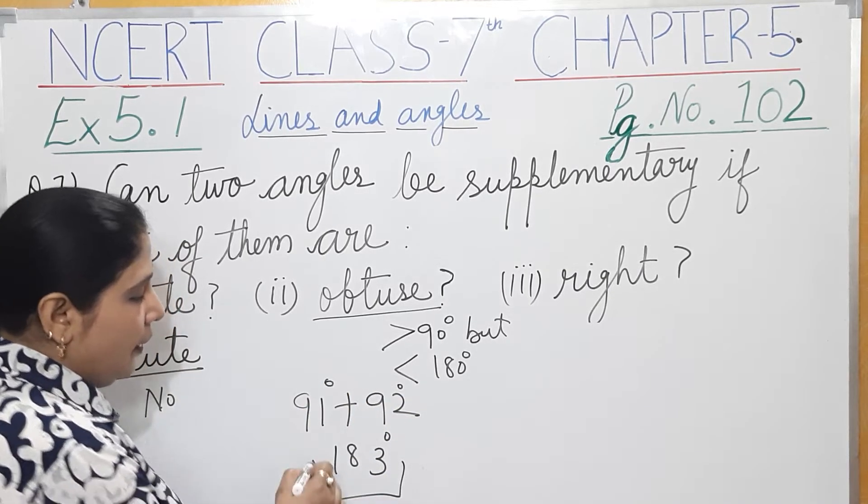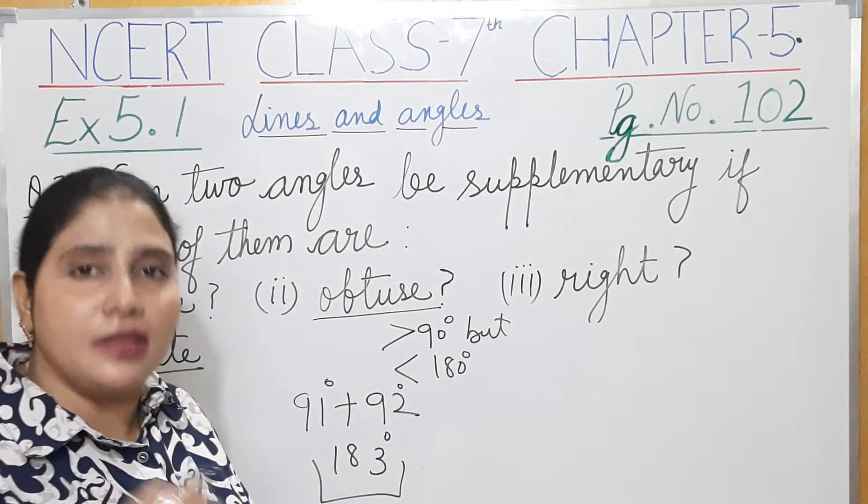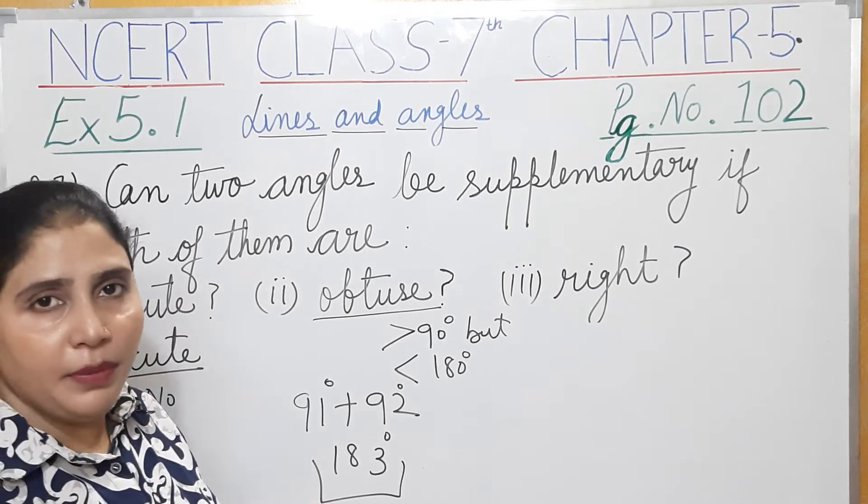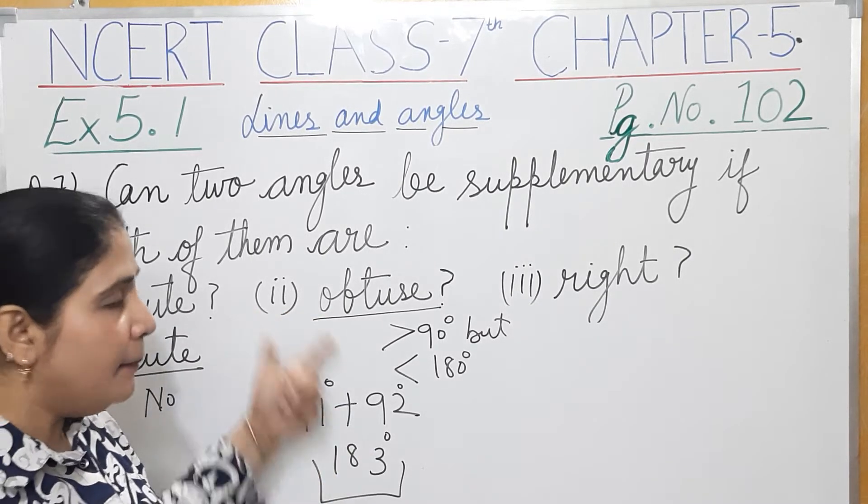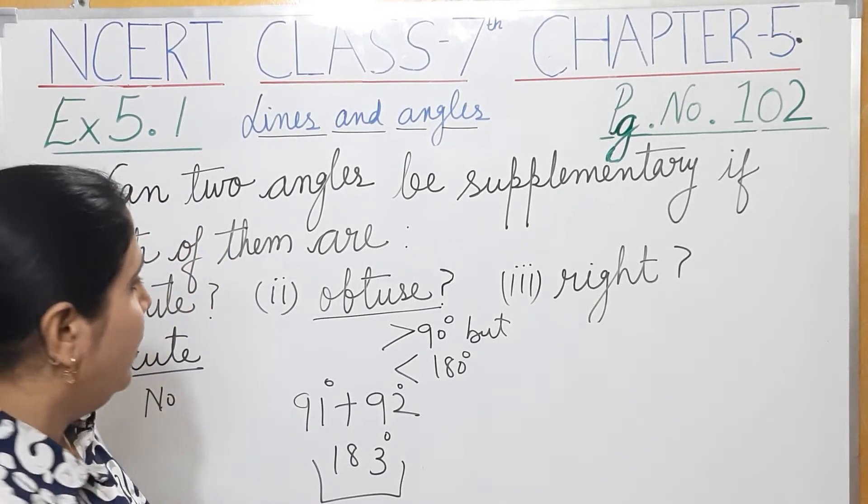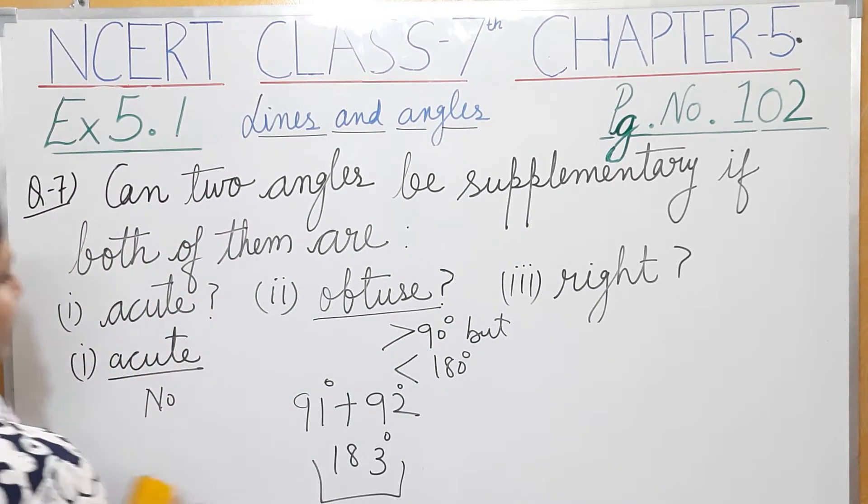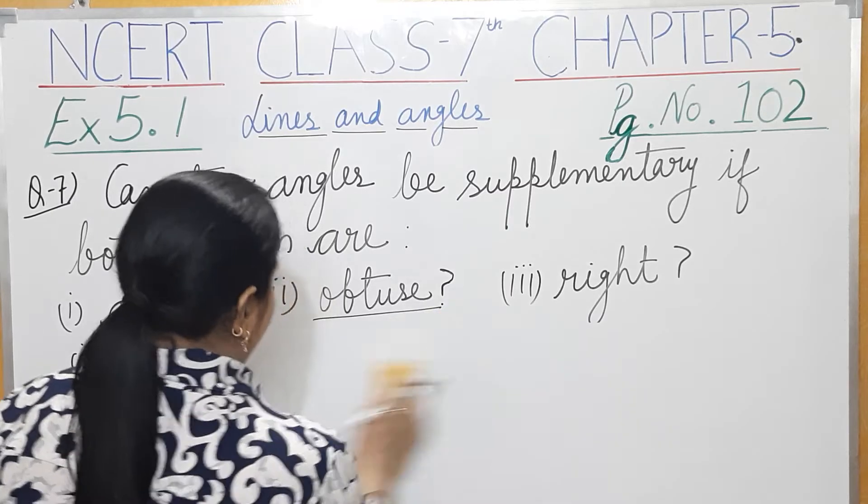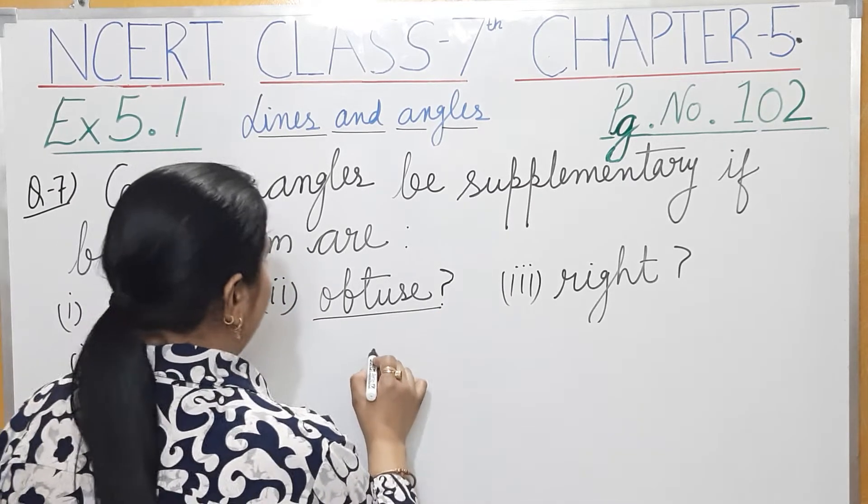This is 183, which is more than 180 degrees, so this is also not supplementary. Two obtuse angles together also cannot be supplementary angles. So the answer is also no.